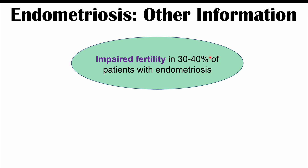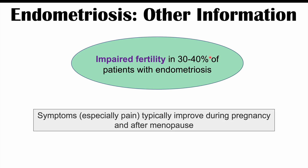Some other important information: endometriosis can lead to impaired fertility, which is a very significant issue — impaired fertility is estimated to affect 30 to 40 percent of patients with endometriosis. There is also a typical pattern with symptoms like pain and dysmenorrhea getting worse over time with each subsequent cycle. However, these symptoms — especially pain — will typically improve during pregnancy and after menopause, as those cyclical hormone levels start to change over time.